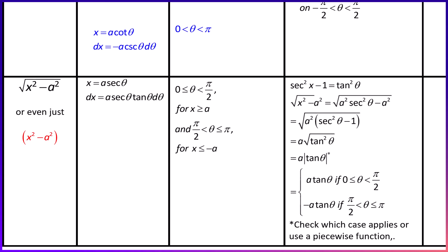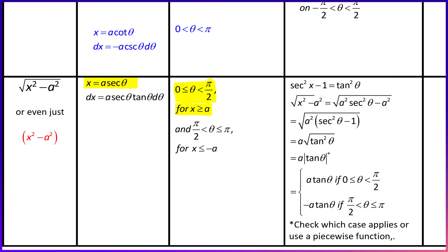As a reminder, if we have something of the form x² minus a², we're going to substitute x equals a secant of theta. For x greater than or equal to a, theta is going to be between 0 and pi over 2. That's the substitution we're going to use. The reason is that it will simplify down really nicely when we get inside the root.